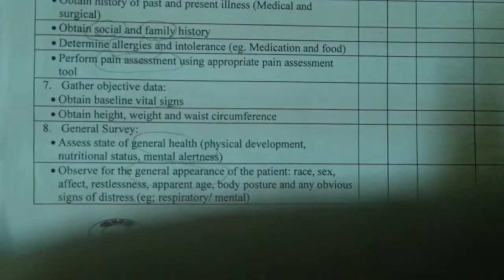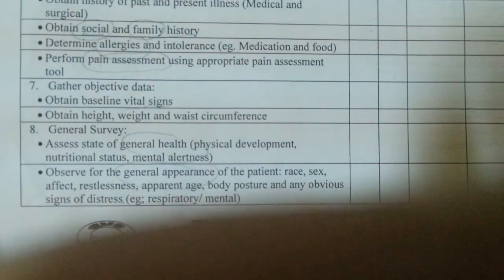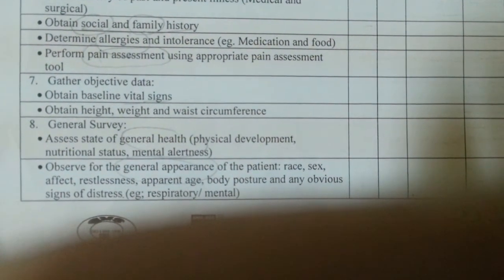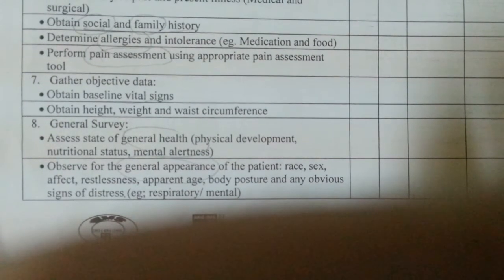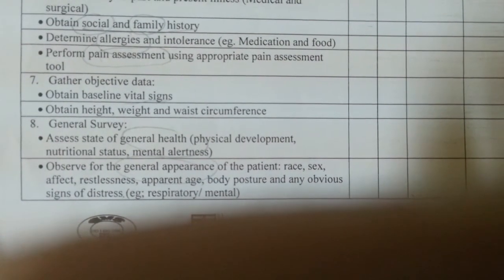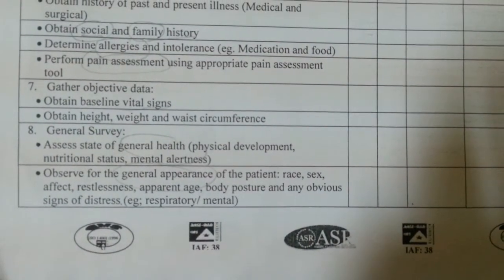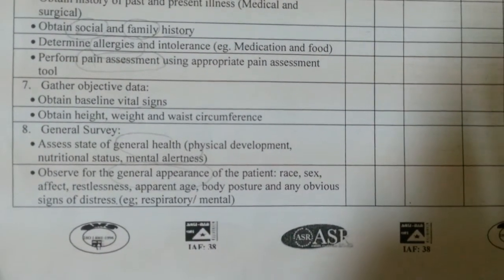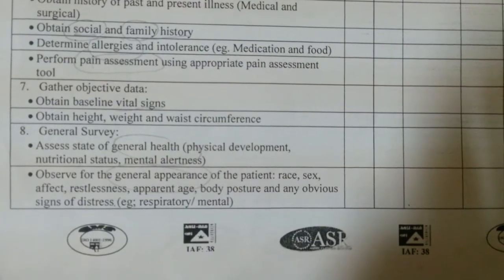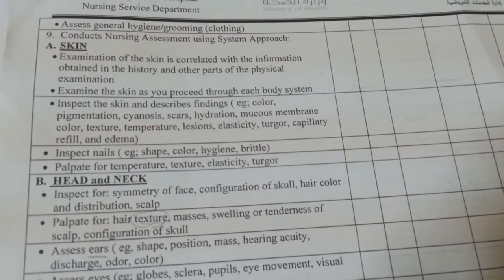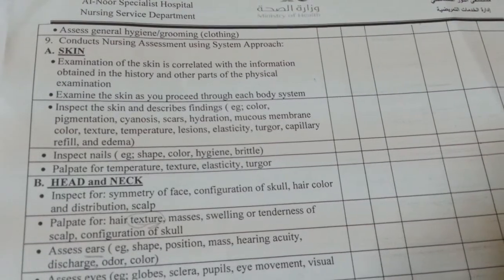For the general survey, assess the state of general health, which includes physical development, nutritional status, and mental alertness. Observe the general appearance of the patient, noting race, sex, affect, restlessness, apparent age, body posture, and any obvious signs of distress — respiratory or mental. Assess general hygiene and grooming.